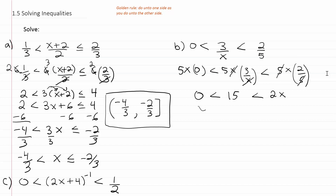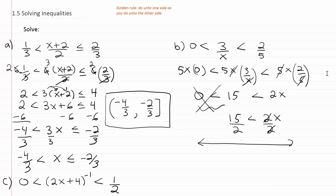At this point, 0 < 15 is an obvious statement, so we just focus on 15 is less than 2x. Dividing both sides by 2, we get 15/2 is less than x. On a number line, x values are greater than 15/2 all the way up to positive infinity. Because the inequality has no equal sign, we use a parenthesis. Our final answer in interval notation is from 15/2 to positive infinity.